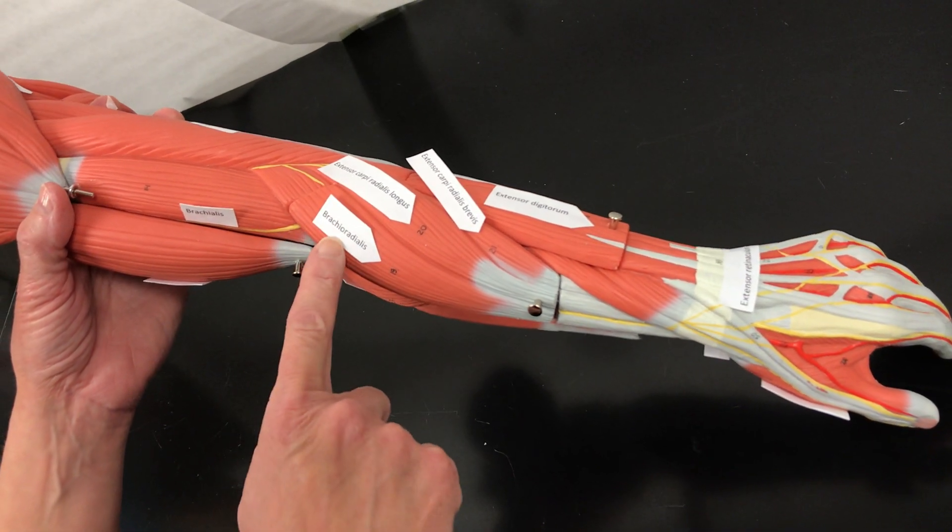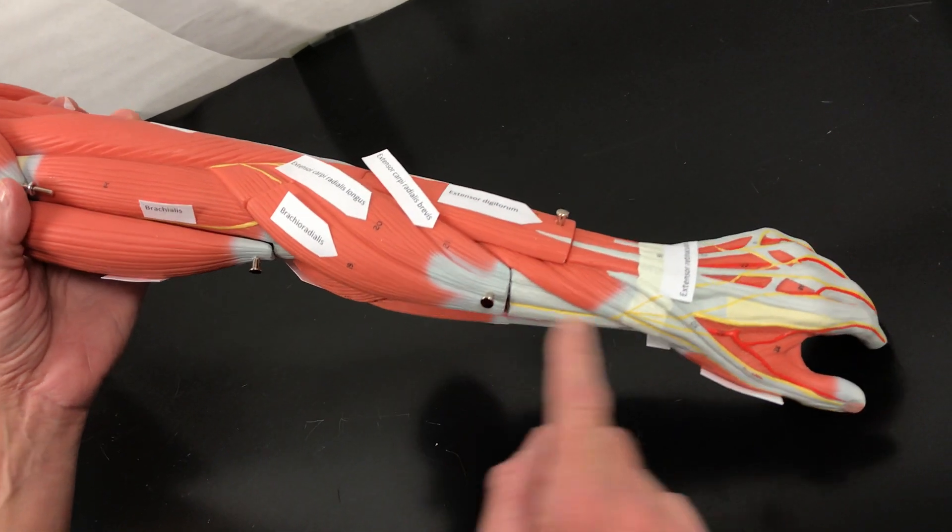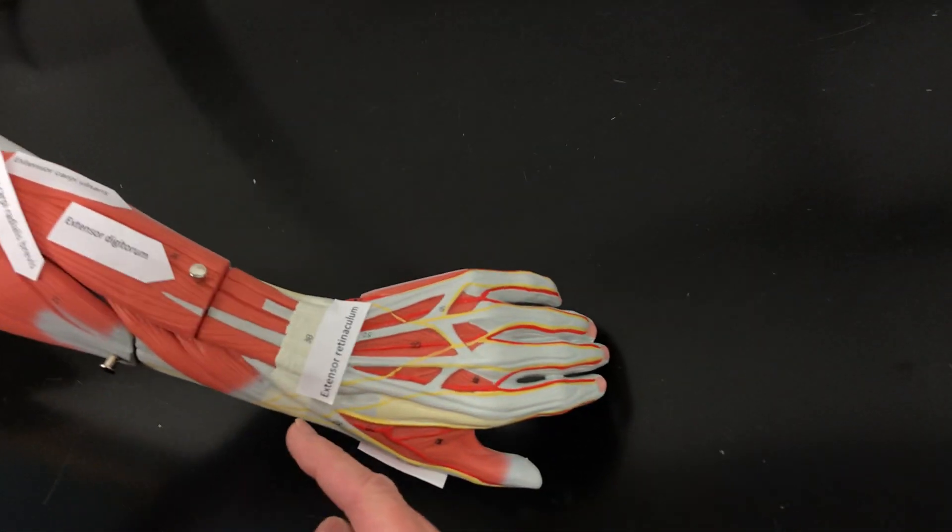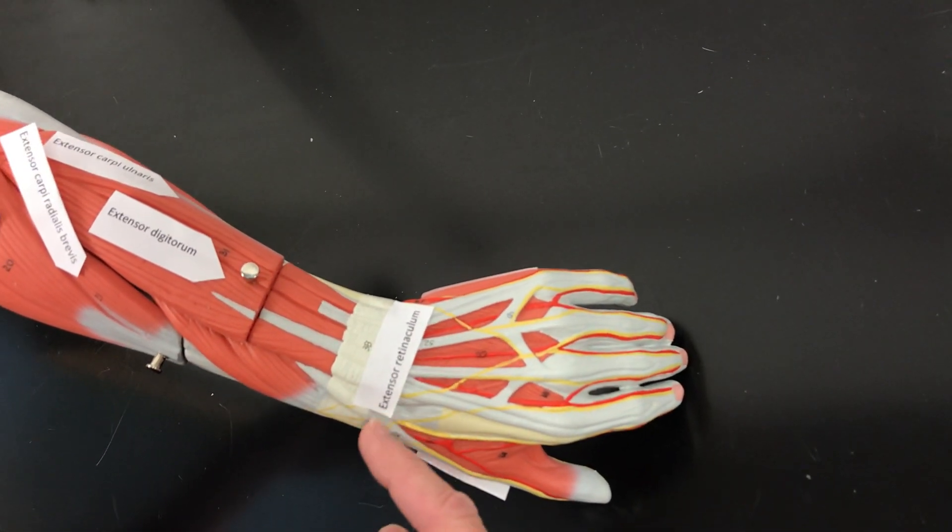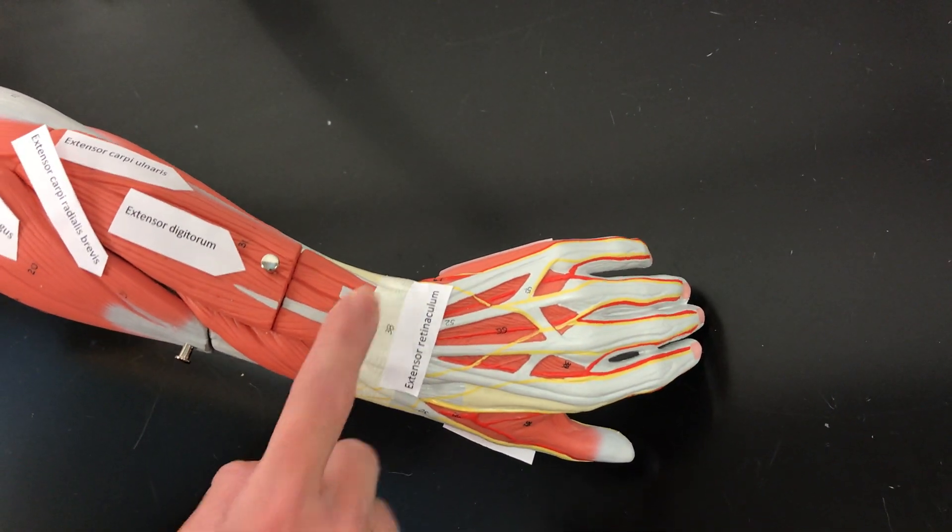We have the brachioradialis, because it's on the radius side. And then we also have this band of tissue that holds down the tendons, the extensor retinaculum.